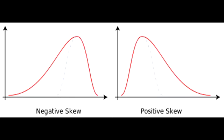A positive skew curve indicates mean > median > mode, with an asymmetrical long tail on the right; mode is least affected by outliers. A negative skew curve indicates mean < median < mode, with an asymmetrical long tail on the left.